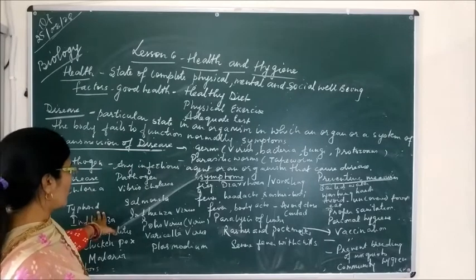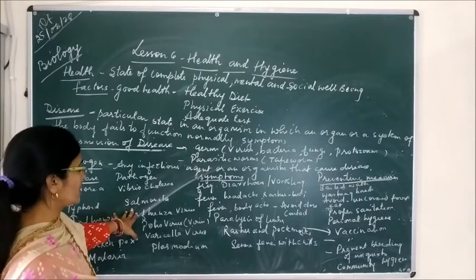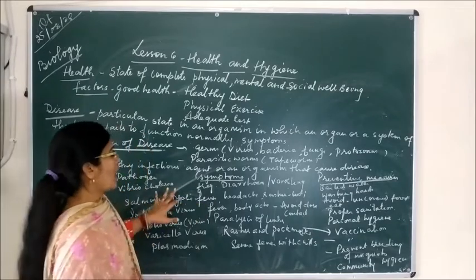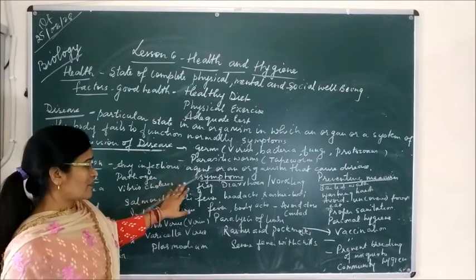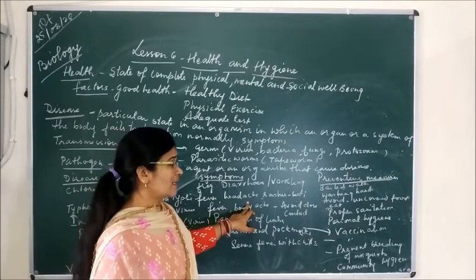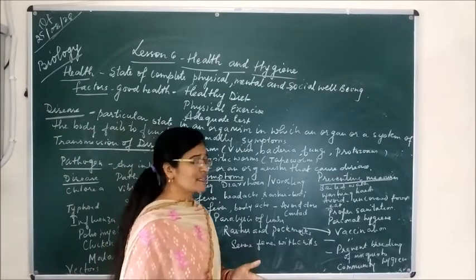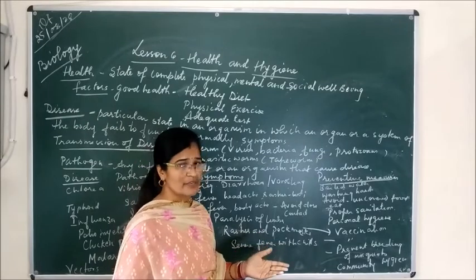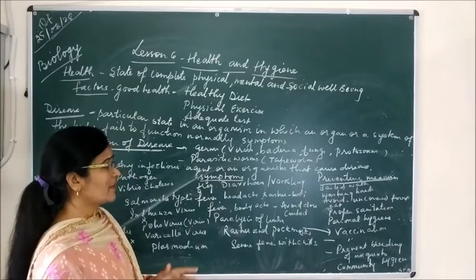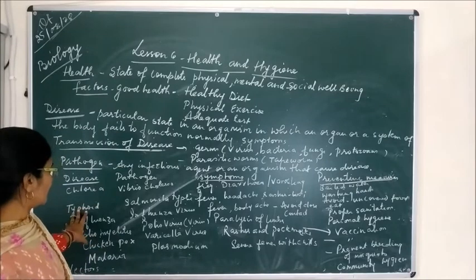The second disease is typhoid. It is caused by Salmonella typhi, which is the name of the pathogen. In typhoid, a person suffers from fever, headache, and rashes on the body. Here also we can prevent the disease through personal hygiene, proper sanitation facilities, drinking clean boiled water, and eating covered food.